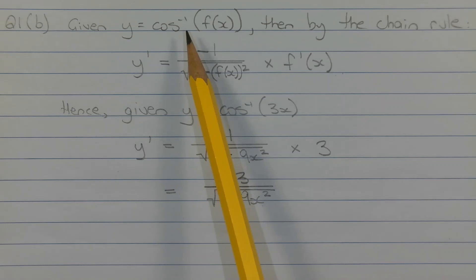Given y equals inverse cos of f of x being a composite function, then by the chain rule, the first derivative y dash is equal to negative 1 over the square root of 1 minus f of x squared, multiplied by the derivative of f of x, which is f dash of x.